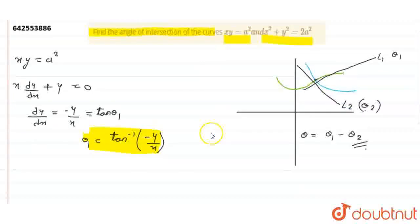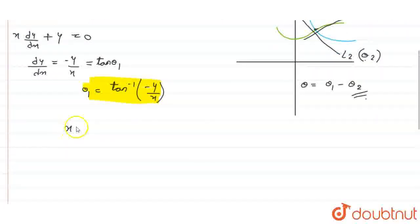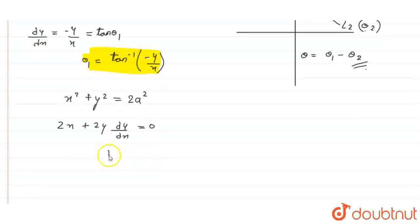Now, considering the second equation, which is x square plus y square equals to twice of a square. We differentiate the function as 2x plus 2y dy by dx equals to 0 because a is constant here. So, we get dy by dx equals to minus x by y.